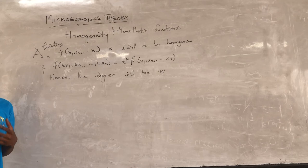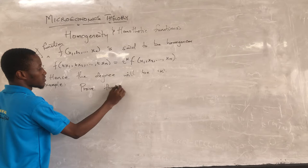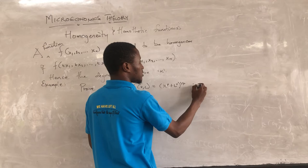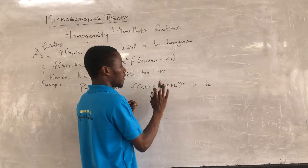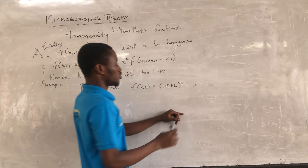Let's go ahead and use an example. Prove that F(K, L) = (K^p + L^p)^(1/p) is homogeneous. For the solution, we know that for homogeneity we introduce a scalar to the variables, so we consider F(tK, tL).